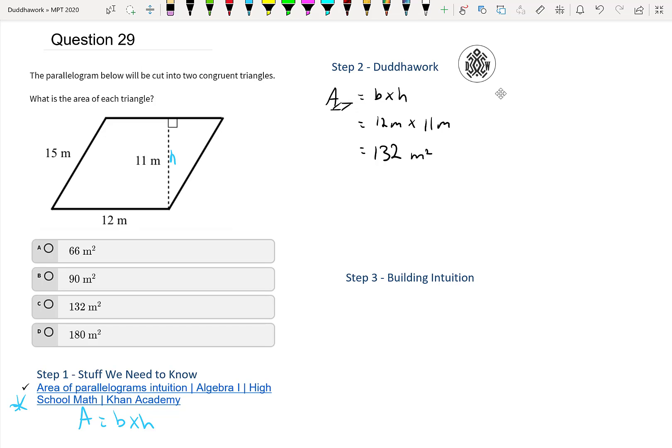So the area is 132 meters. I'm tempted to say it's C. However, don't forget what the question is. Don't get caught. The question is the parallelogram below will be cut into two congruent triangles. So let's say that we cut it like so. We would divide the area by two. So let's say that is step one. Then step two,